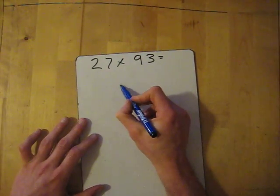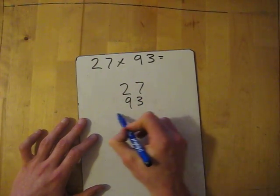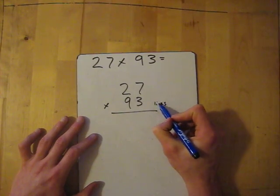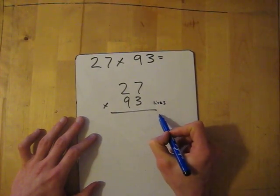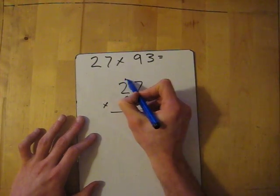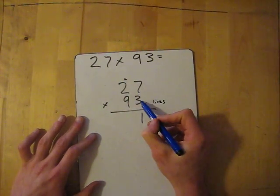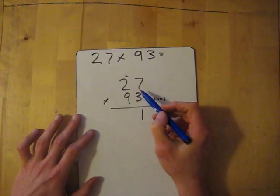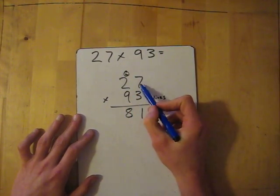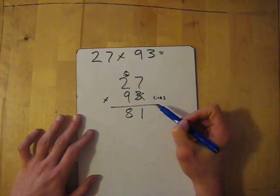So 27 times 93. Okay. So life one, so we've got our lives. Going through life one, it's going to end up here. So three times seven gives me 21. Then three times two gives me six, and then add the two, it's an eight. So I've used up and killed all the numbers above. So I've done life one.